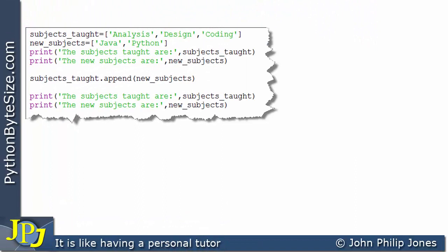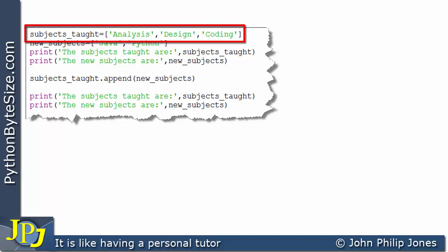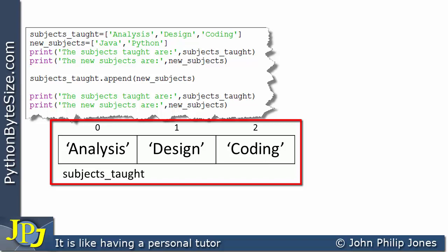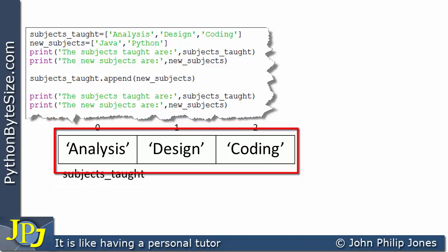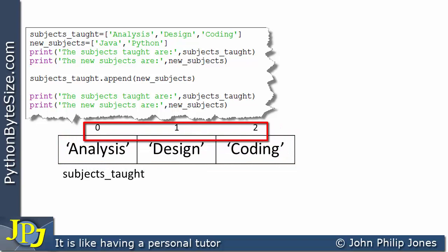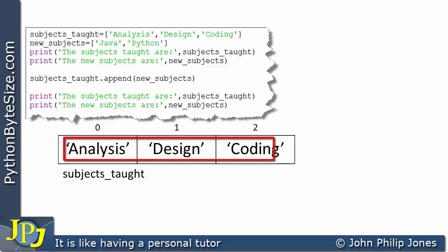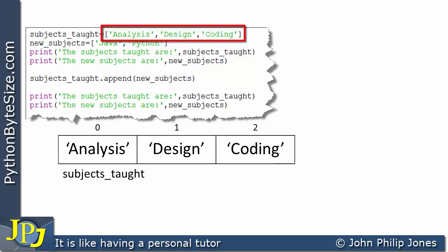Let's consider this computer program and look at the first line — you can see it's going to create a list with the name subjects_taught. Schematically, we will see a list which is an instance of the list class with three elements, indices going from zero to two. The content of those elements are 'analysis', 'design', and 'coding' as strings, as you can see in the code.